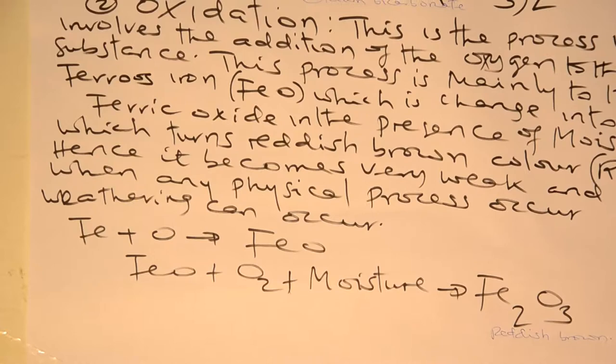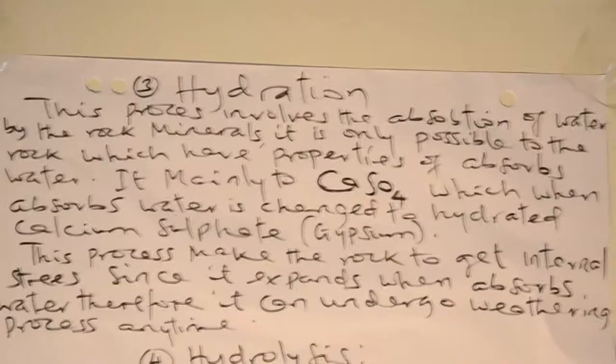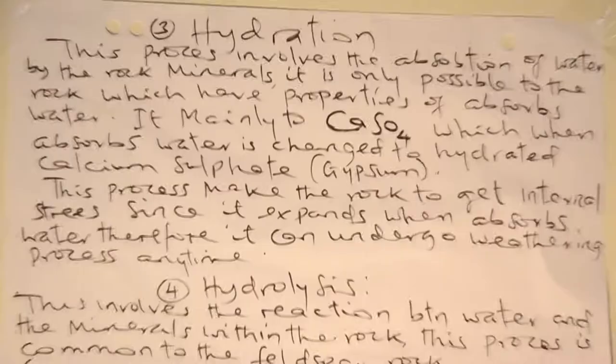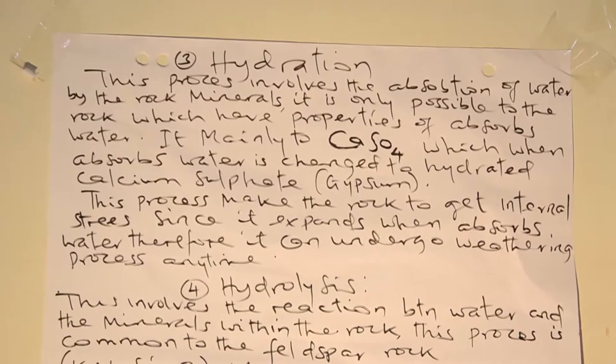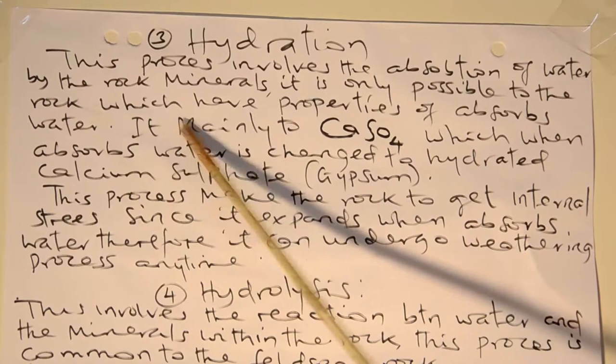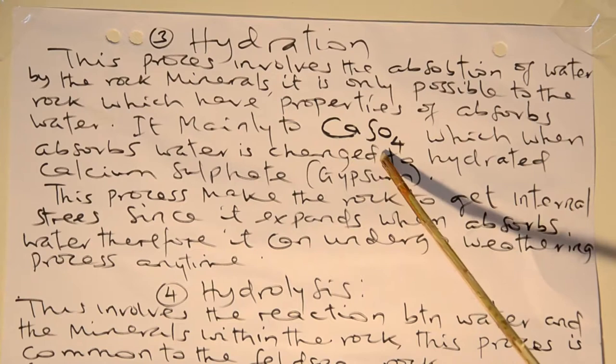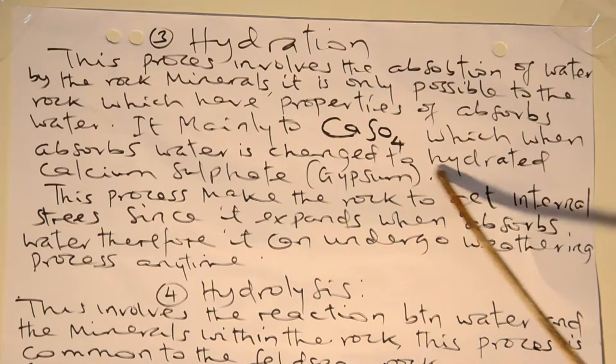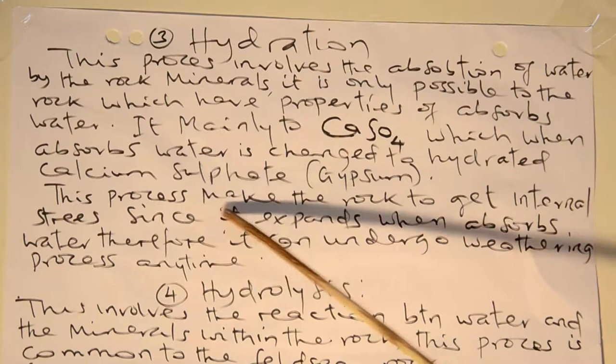Another process of chemical weathering is hydration. This process involves the absorption of water by the rock minerals. It is only possible in rocks which have the property of absorbing water. It is related to calcium sulfate, which, when it absorbs water, is changed to hydrated calcium sulfate, which is gypsum. This process makes the rock get internal stress, since it expands when it absorbs water, and therefore it can undergo weathering.